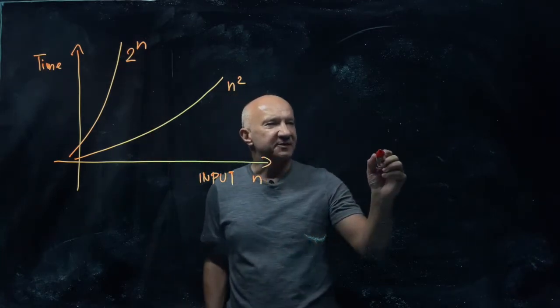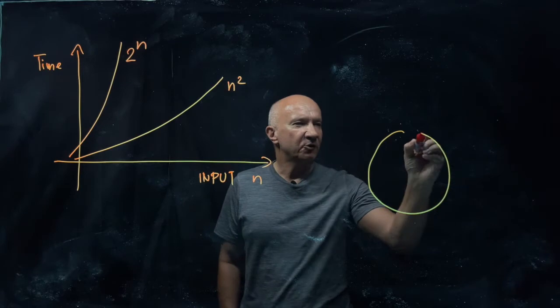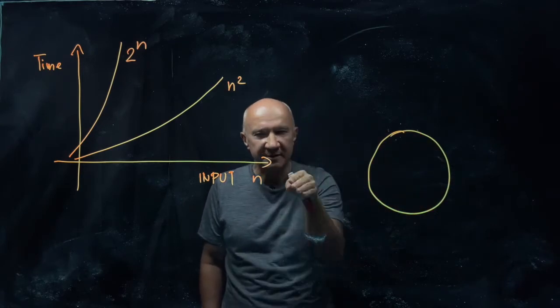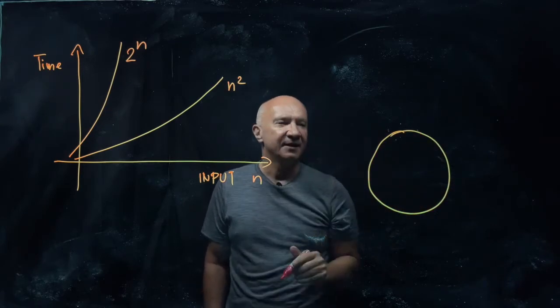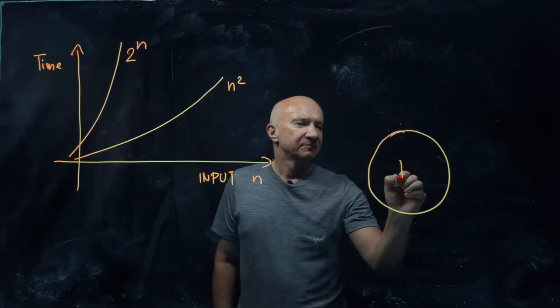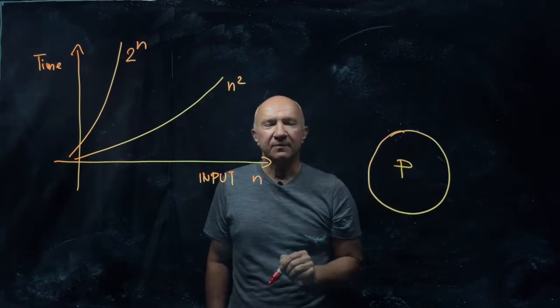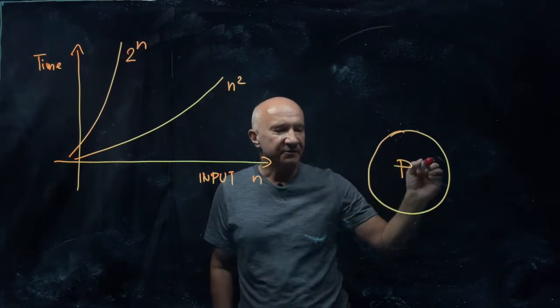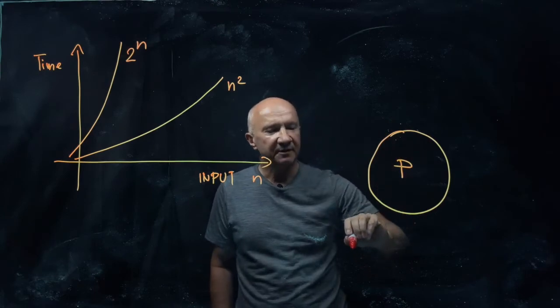And then they just draw complexity classes. They say, okay, all problems that we can solve on a deterministic classical computer in polynomial time, call this class P. Then of course, this is a subset of a huge class of problems that require exponential time to solve them.